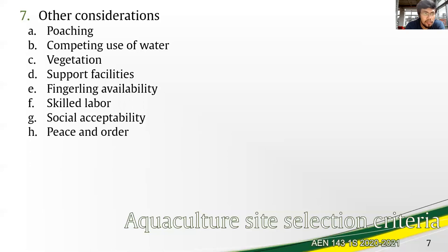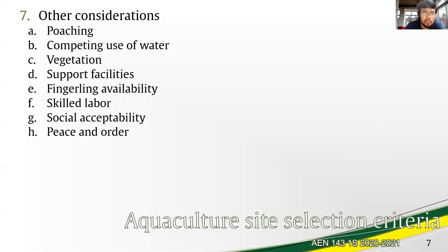They are social in relation to the aquaculture enterprise, while vegetation, support facilities, fingerling availability, and skilled labor are technical, but can be addressed by minimal non-technical interventions. For example, vegetation can help limit movement, thus planting may be done or encouraged. Support facilities and fingerling availability can be addressed by transport networks or farm-to-market roads and transportation. Lastly, the skilled labor issue can be addressed by adopting training programs.